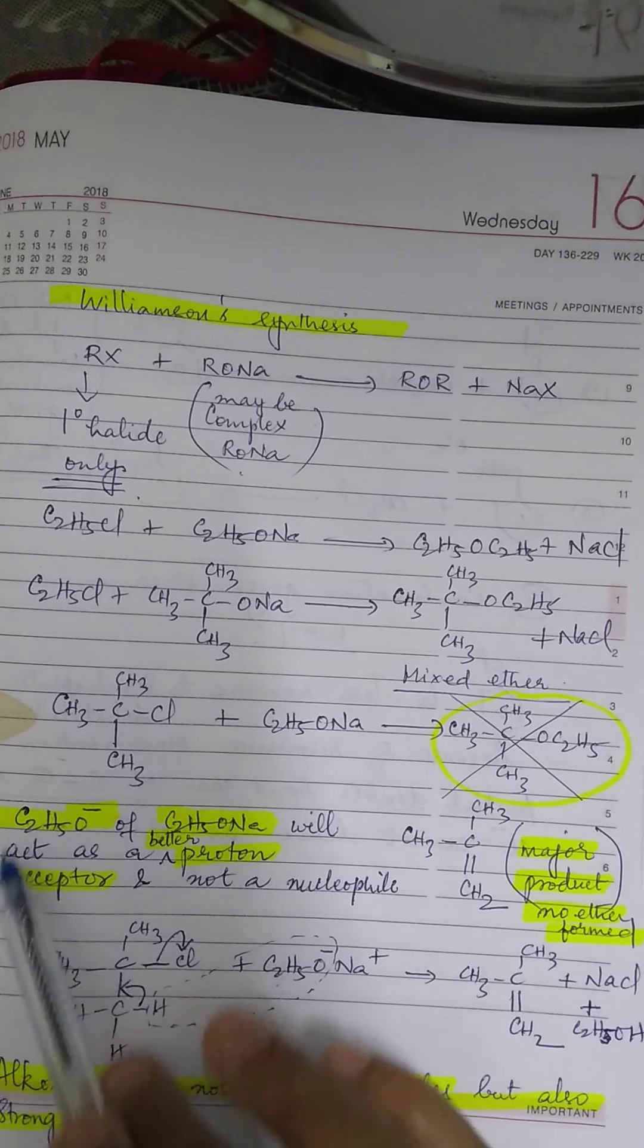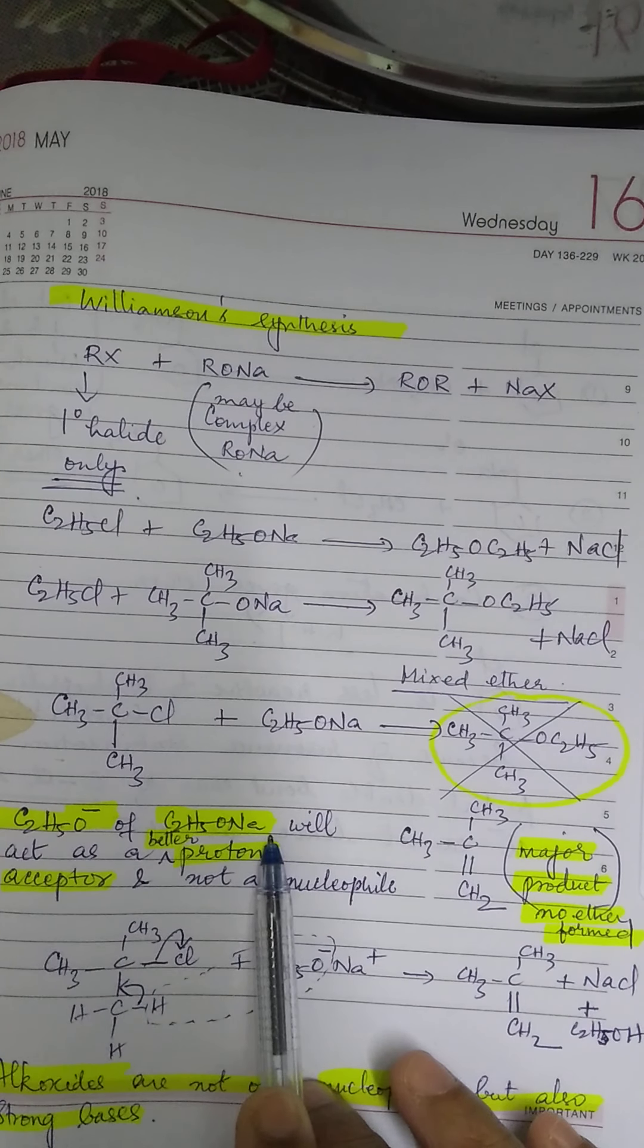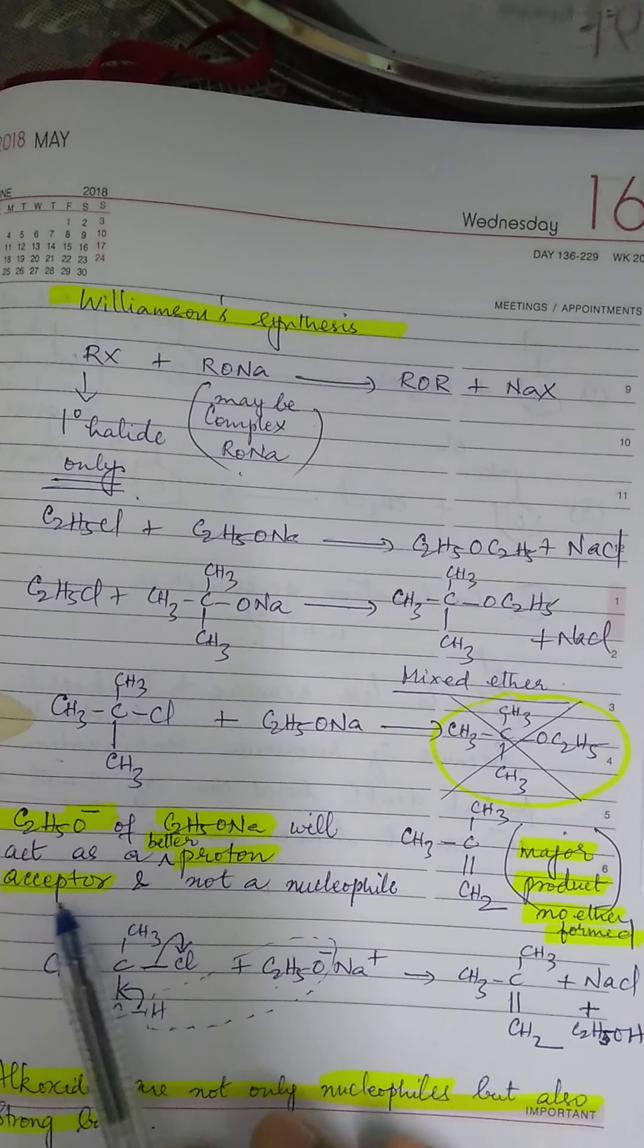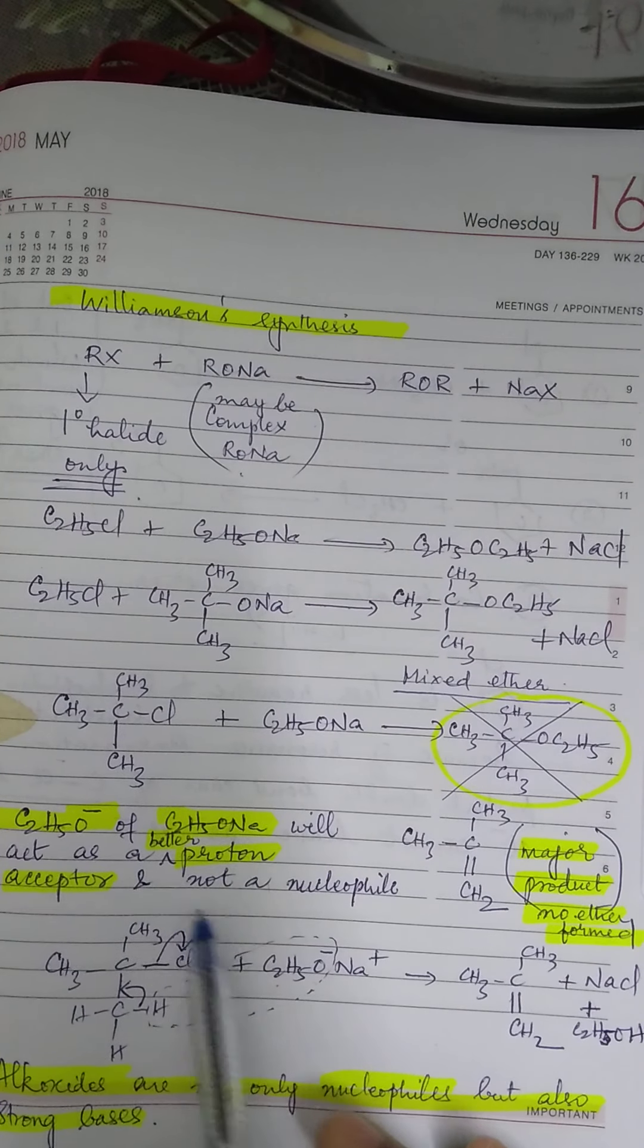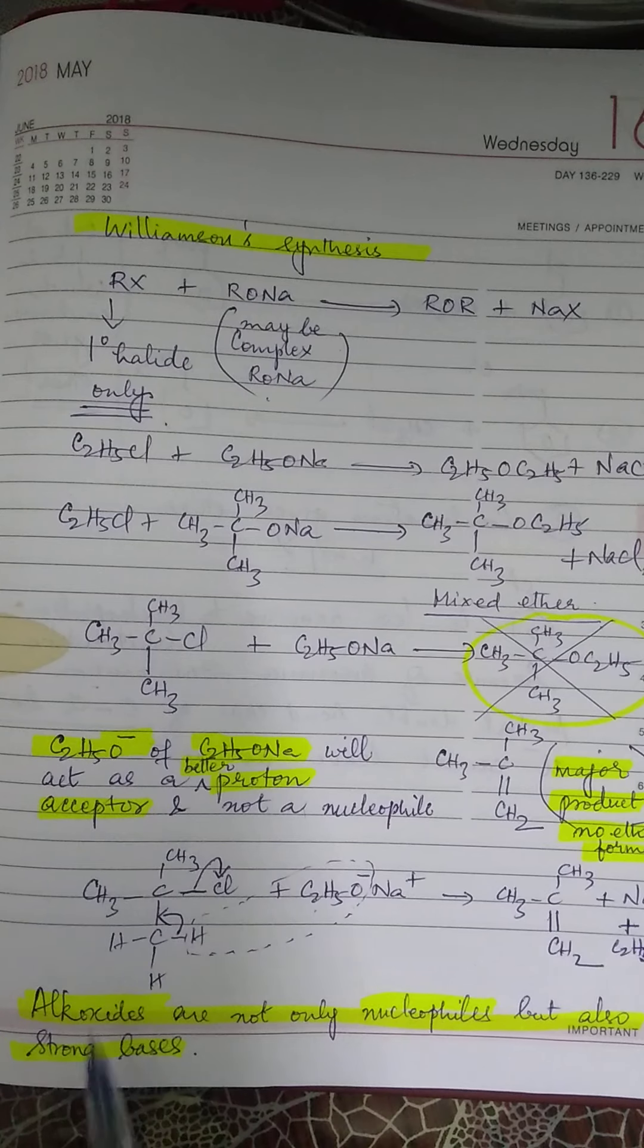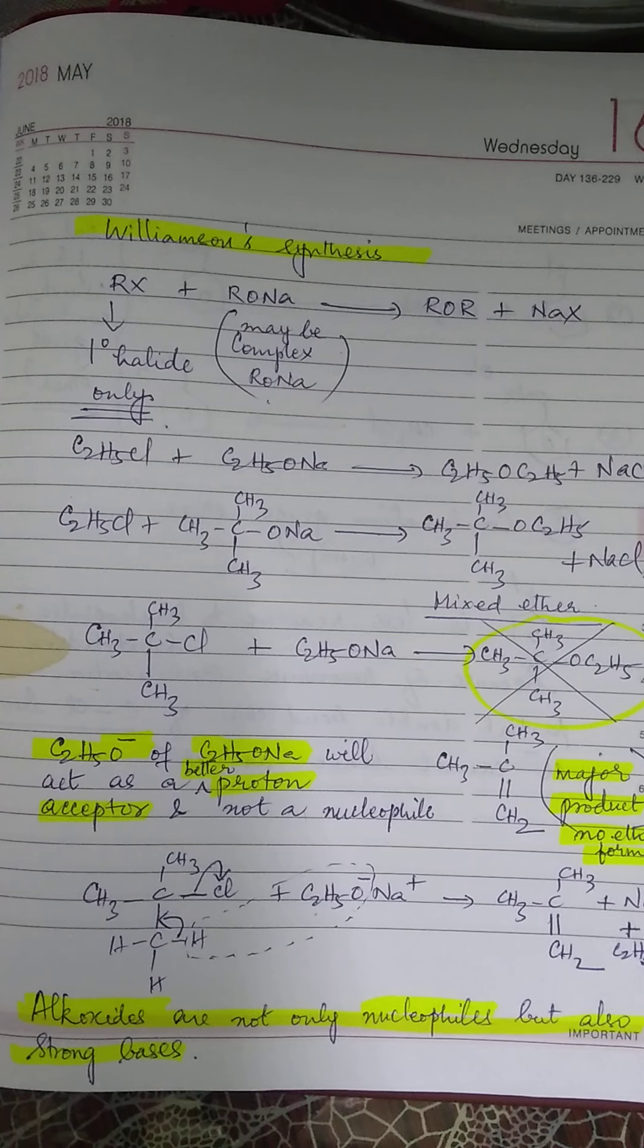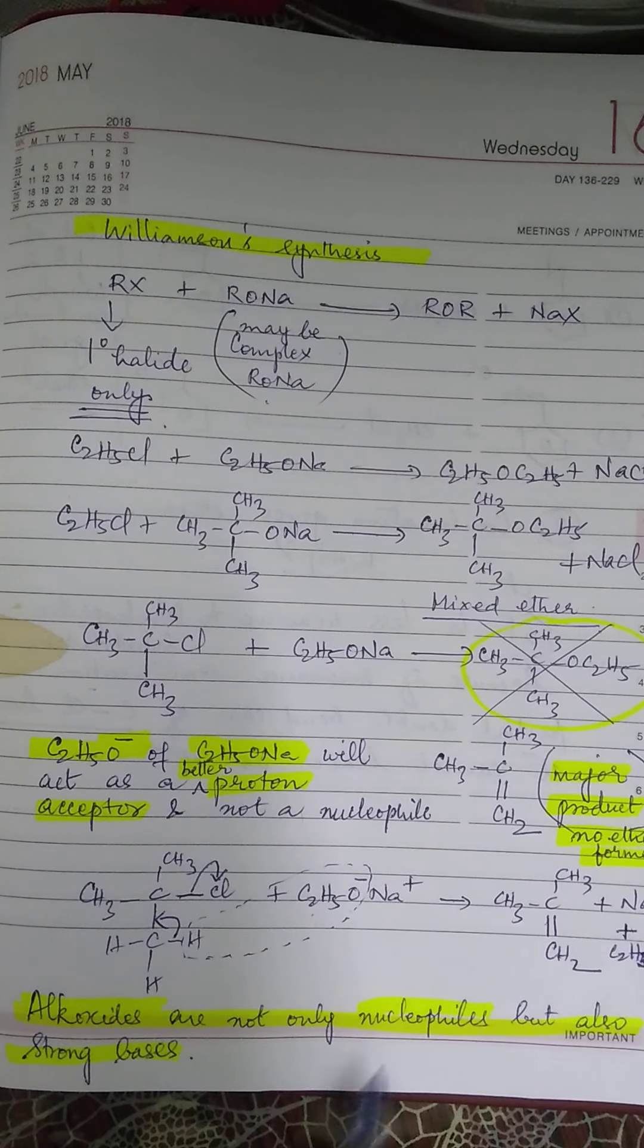The C2H5O minus which is derived from C2H5ONa will act as a better proton acceptor more than a nucleophile. Instead of acting as a nucleophile, it will better act as a proton acceptor. What is a proton acceptor? Base. Base is a proton acceptor. How is it accepting as a base? See here.